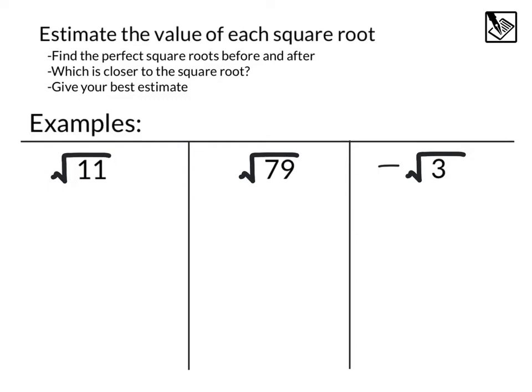So here we've got this square root of 11. Again, before and after, it looks like I'd probably have square root of 9 and square root of 16, which means that it's going to be between 3 and 4. When I look back here, I see that 9 is only 2 spaces away from 11, 9, 10, 11.